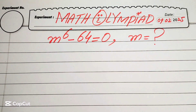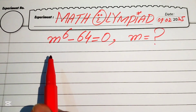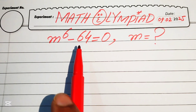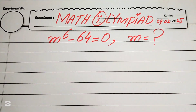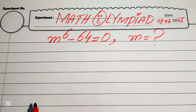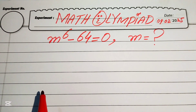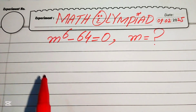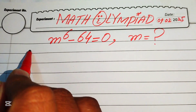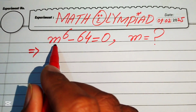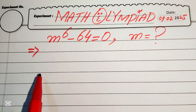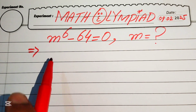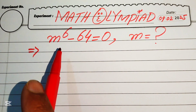Hello everyone, welcome. We are going to solve this algebra problem: m to the power of 6 minus 64 equals 0, and we solve for the values of m. This is a sixth order equation, which means we need to find the sixth root of this equation.